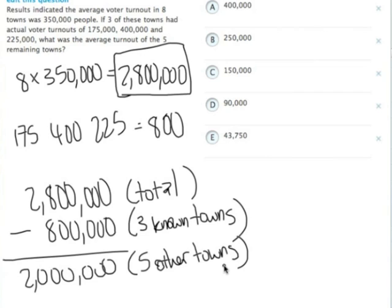And from there, in order to figure out the average of those 5 other towns, we simply divide the total remaining people here, the 2 million, by 5. So, the average turnout of the 5 remaining towns was 400,000 each.